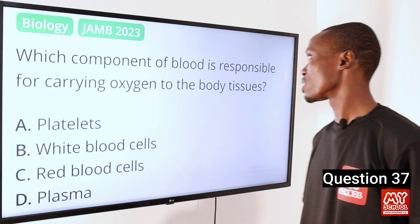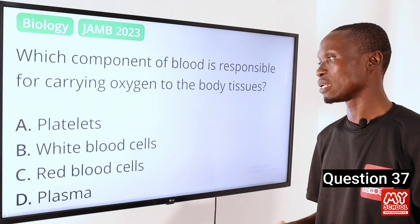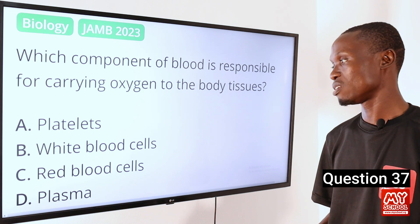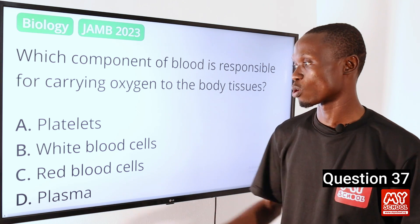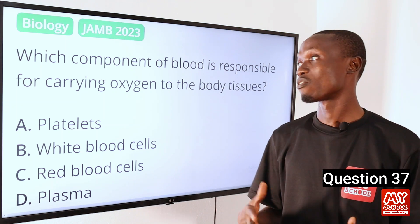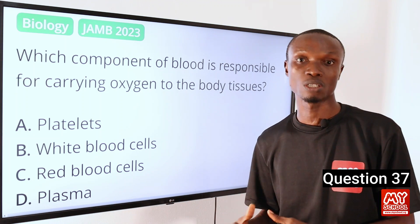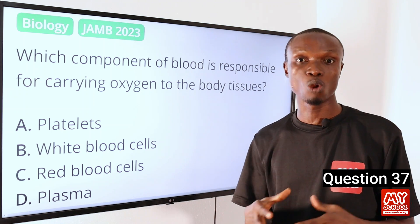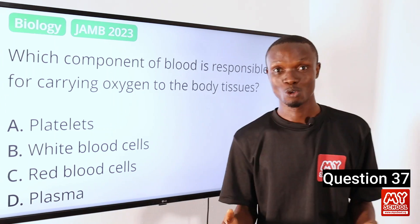Question 37. Which component of blood is responsible for carrying oxygen to the body tissues? A. Platelets. B. White blood cells. C. Red blood cells. D. Plasma. The answer is option C, red blood cells. Red blood cells, also known as erythrocytes, are responsible for carrying oxygen to the body tissues. They contain a protein called hemoglobin which binds oxygen in the lungs and transports it to other parts of the body. So option C is the correct answer.